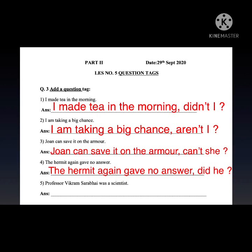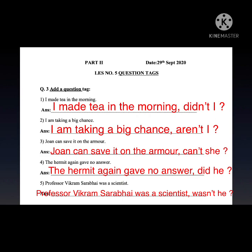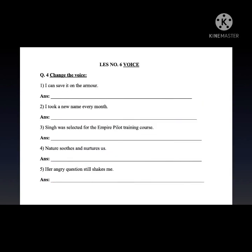'Professor Vikram Sarabhai was a scientist.' The auxiliary verb is 'was' — let's take 'was' out. As the sentence is positive, we make it negative. The answer is: 'Professor Vikram Sarabhai was a scientist, wasn't he?' Now moving to the next topic: lesson number 6, Voice.